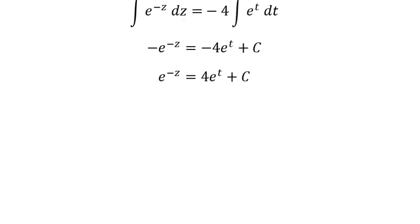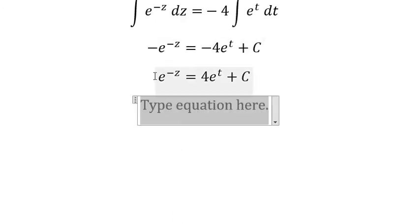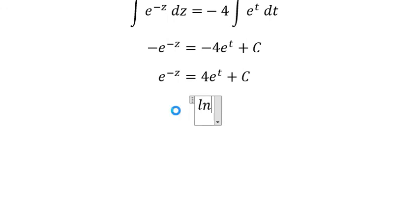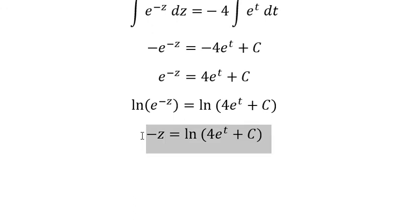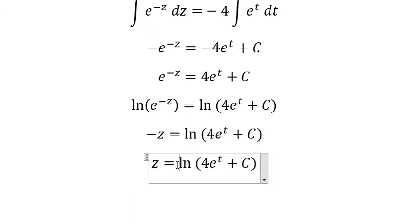Next, we apply the natural logarithm to both sides. This gives you negative z on the left. And z equals the negative of this expression: negative ln of 4e^t plus C. That's it, the end. Thank you for watching.